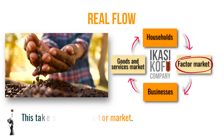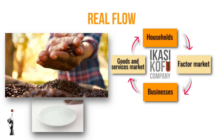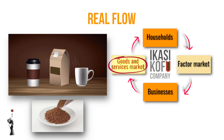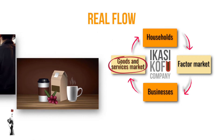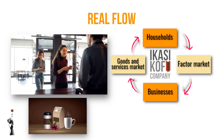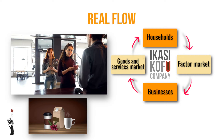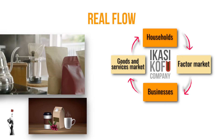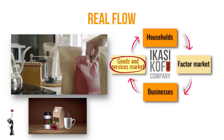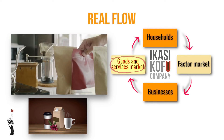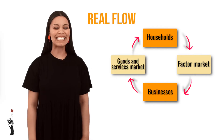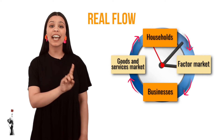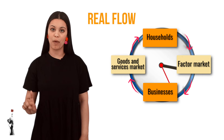The goods, or in this case coffee, are offered to households on the goods market. Olivia, a customer, buys a cup of coffee every day on her way to work. The coffee was bought on the goods market. Grade 9s, you will see that the flow of this diagram is a clockwise flow.